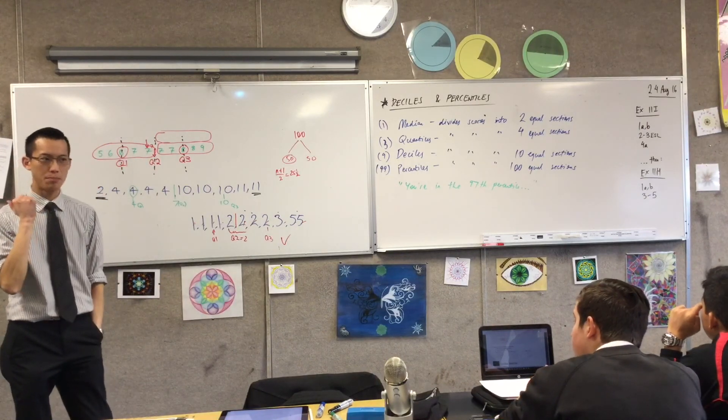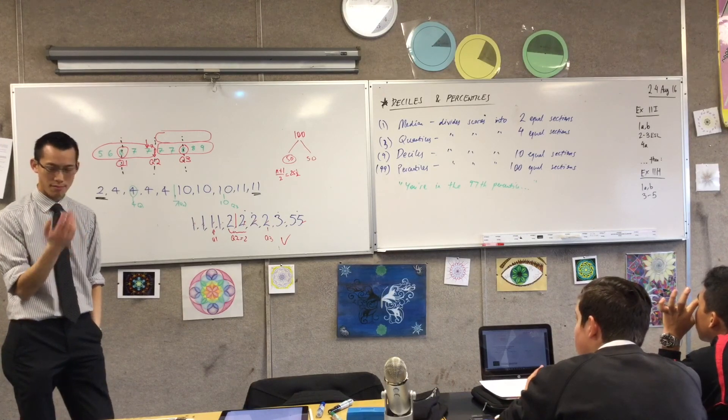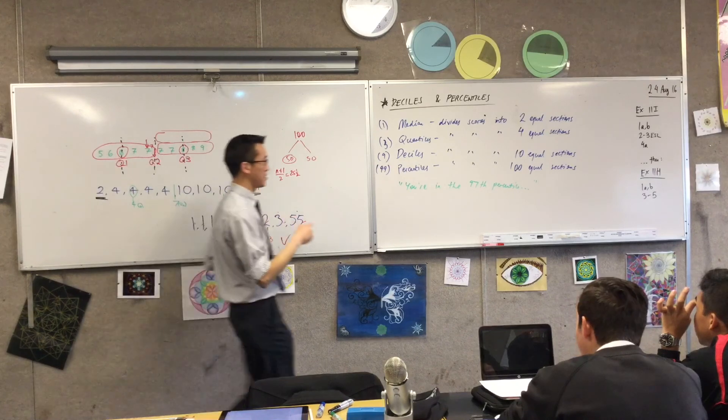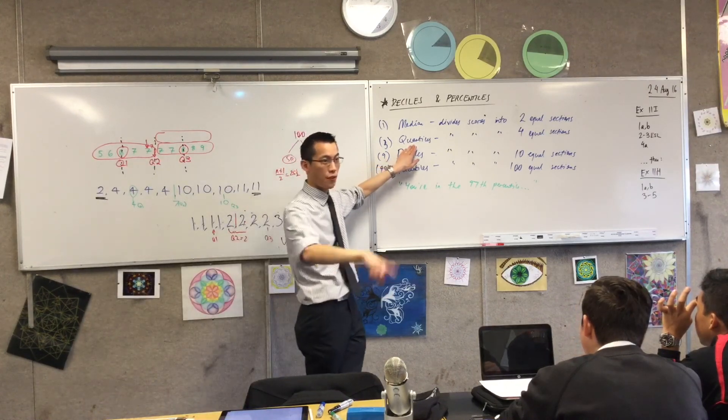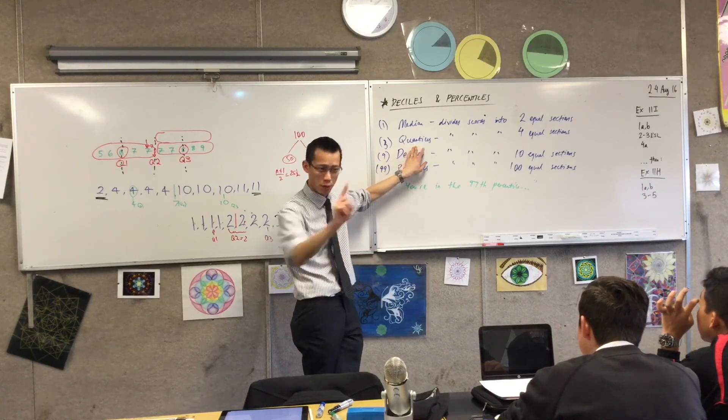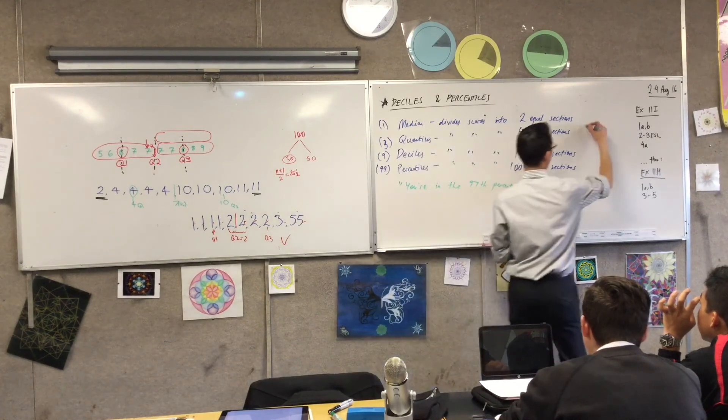Now what that means is, because you've divided up all of your scores into 100 equal sections, and you're on the 97th one, how much of the population is below you?